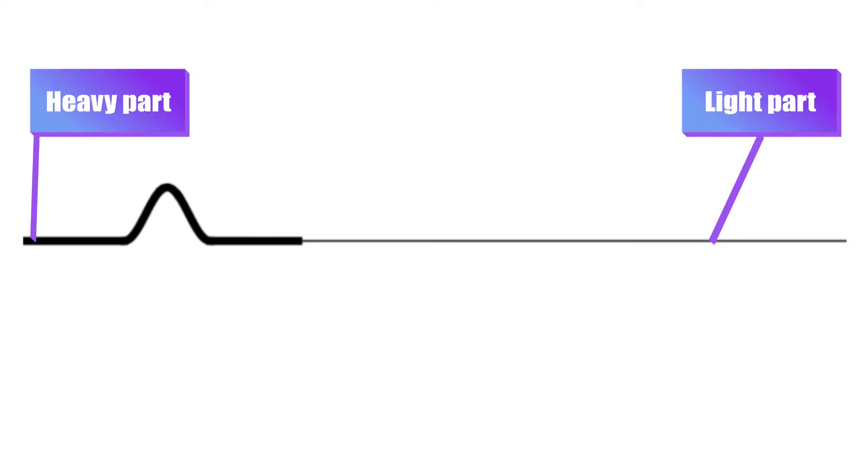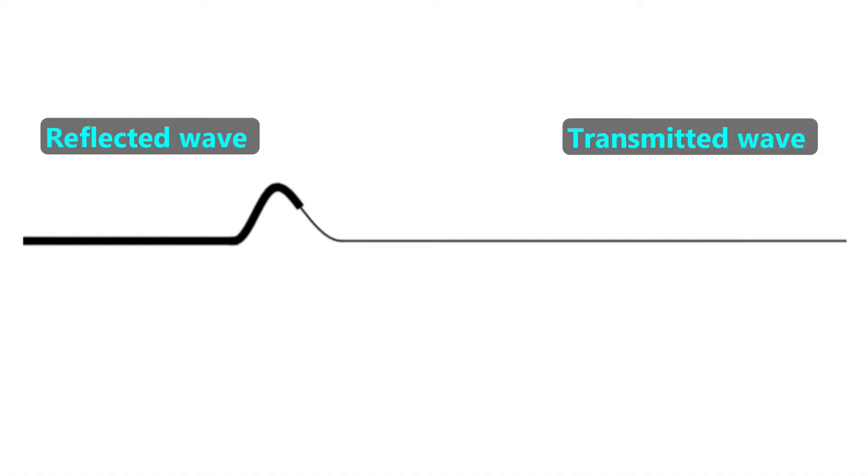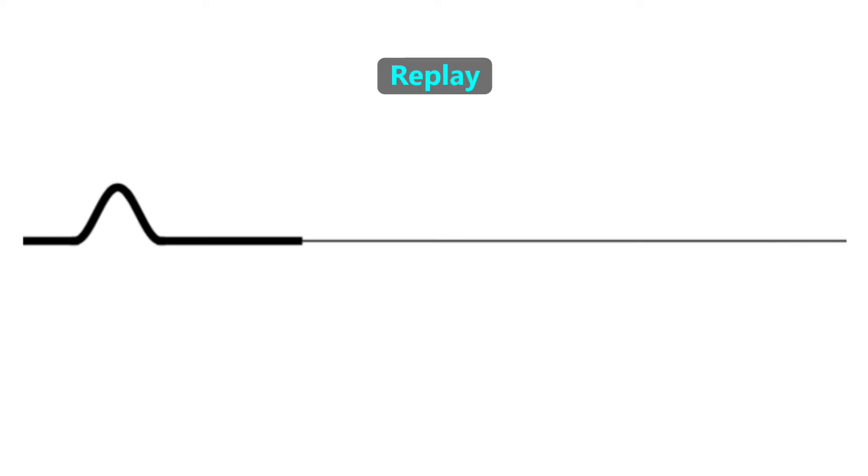In contrast, if we had started the wave in the heavy part of the string, then when it hits the boundary, both the reflected and transmitted wave will have positive amplitudes. The reflected wave behaves as though it has hit a free end because it encounters lower resistance to its oscillation.